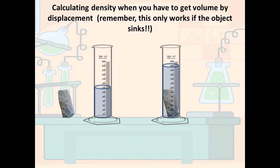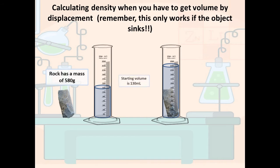Now let's move on to calculating density when you have to get volume by displacement. Remember, this only works if the object actually sinks. This rock has a mass of 580 grams. First, fill the graduated cylinder with plain water to a starting level, reading at the bottom of the meniscus. Our starting volume is 130 milliliters.